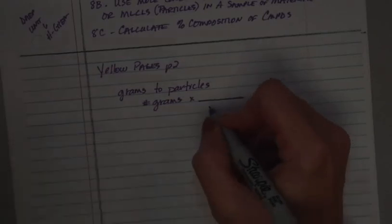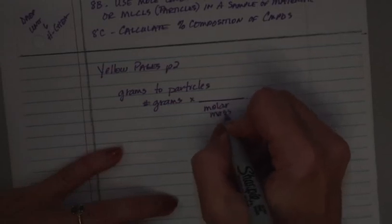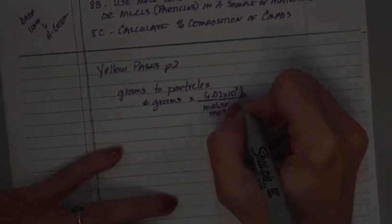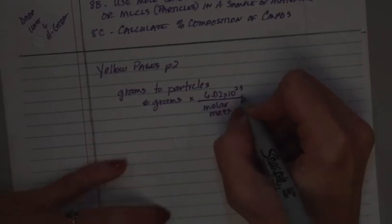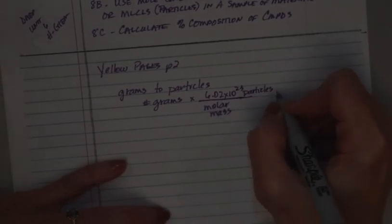So, we have the molar mass of the substance on bottom and we have Avogadro's number on top. And you'll either put atoms or molecules or whatever it is, but I'm going to put particles right here because that's a little bit more generic.